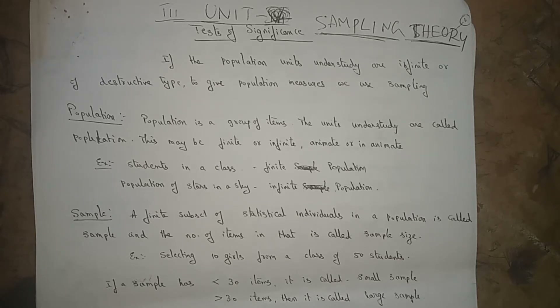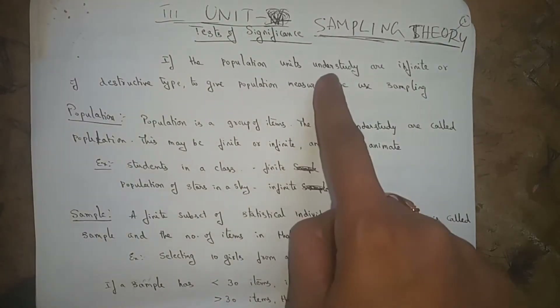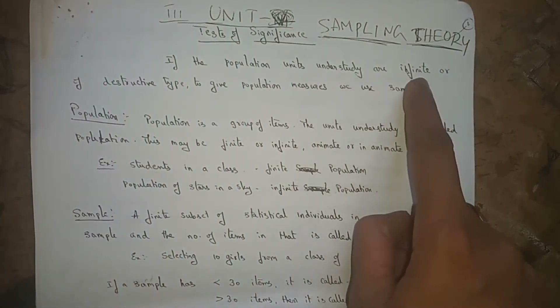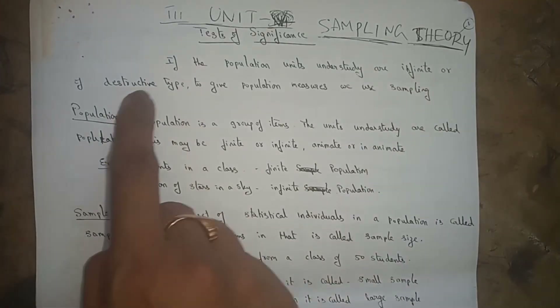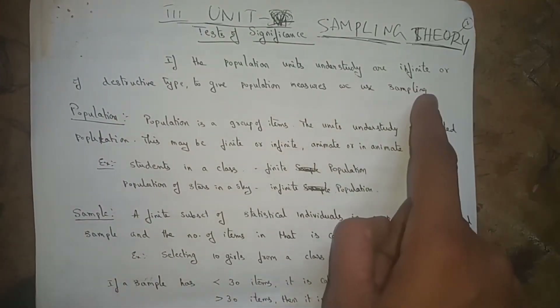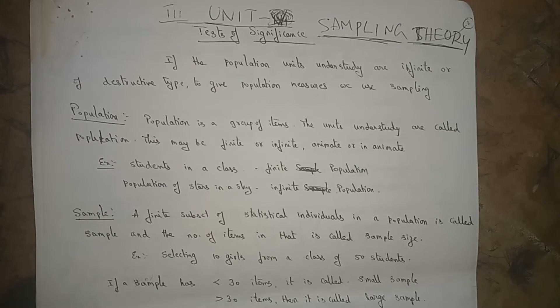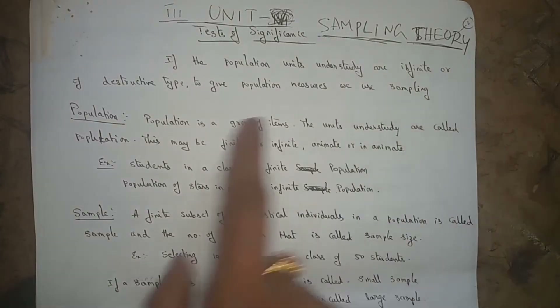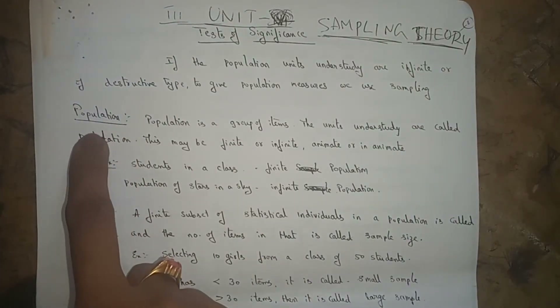What is sampling theory? If the population units under study are infinite or of a distributive type, to give the population measures we use sampling. That means if the population units are infinite, then whatever distribution type we have, to give the population measures, we use sampling.